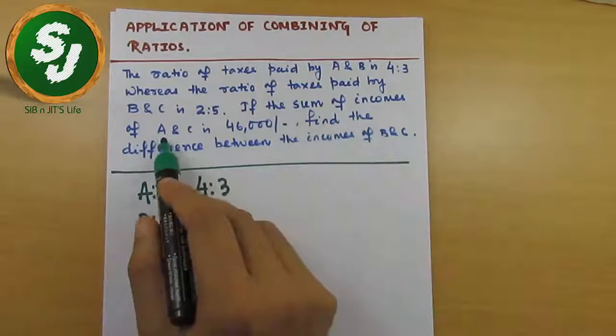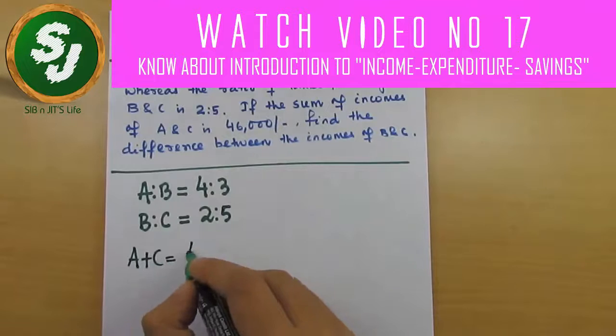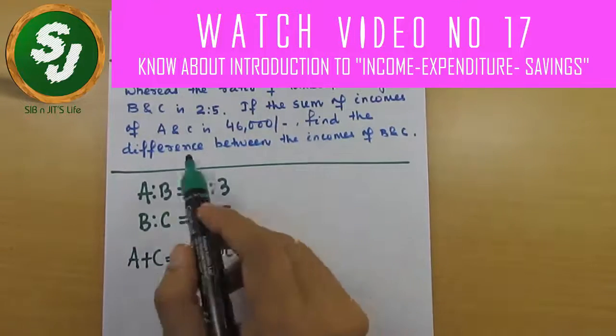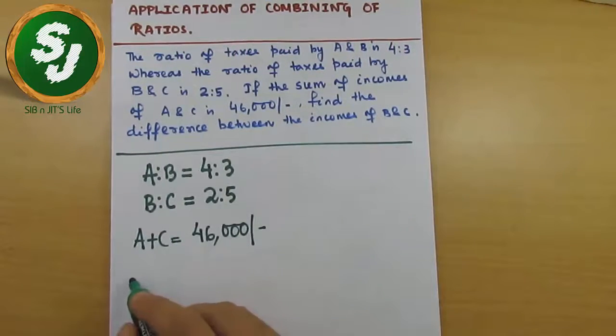If the sum of incomes of A and C is 46,000, it means A + C = 46,000. Find the difference between the incomes of B and C. So it's asking for the difference between B and C.